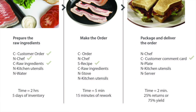In step four, you classify the process inputs as either critical, controllable, standard operating procedure, or noise. From our previous input examples: the chef input would be classified as noise; customer order and raw ingredient inputs would be classified as controllable; the recipe input would be classified as standard operating procedure; and the customer comment card would also be classified as controllable.